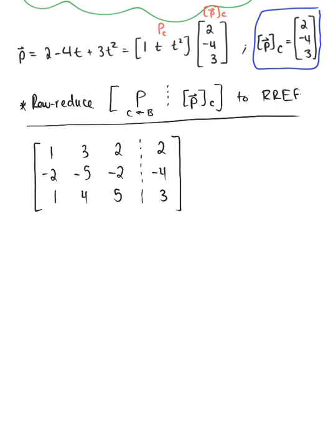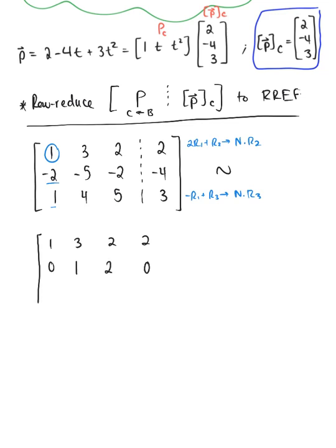Starting from the first pivot, we eliminate entries below it. Performing 2 times row 1 plus row 2 gives the new row 2, and negative row 1 plus row 3 gives the new row 3. Row 1 stays as [1, 3, 2 | 2]. Row 2 becomes [0, 1, 2 | 0]. Row 3 becomes [0, 1, 3 | 1].